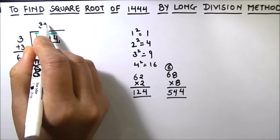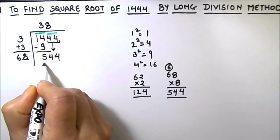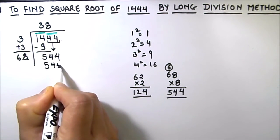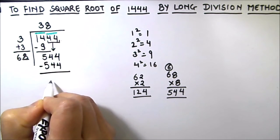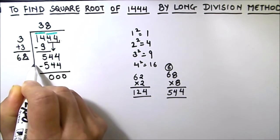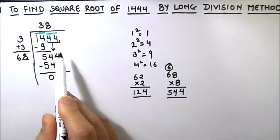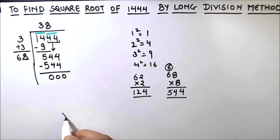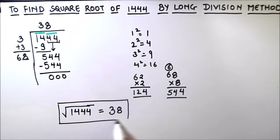So 68 times 8 will give us 544, which we are going to subtract to get the result as 0. Now here we have divided all the digits. So we got the answer as square root of 1444 as 38. So this is how by using the long division method you can find the square root of any number easily.